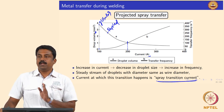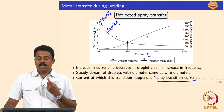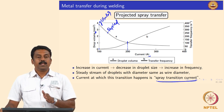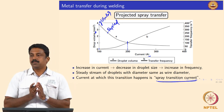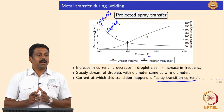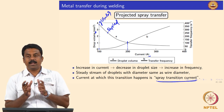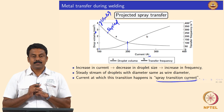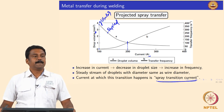Spray transition current is a very critical parameter in GMAW welding. If you want to maximize productivity and achieve good, stable transfer characteristics, you need to operate your welding current just above spray transition. You melt more and have very stable transfer. The thumb rule is that when the droplet diameter becomes more or less equal to the filler wire diameter, you can achieve very stable transfer in spray mode.